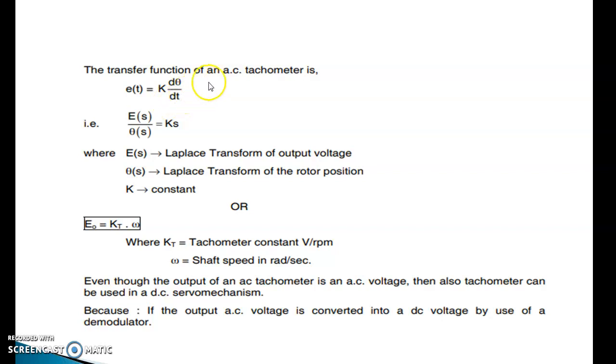The transfer function of an AC tachometer: E of t equals k d theta by dt. That implies Es by theta s equals k times s, where Es equals Laplace transform of rotor voltage, theta s equals Laplace transform of rotor position, k equals constant. Or you can write E zero equals kt times omega, where kt equals tachometer constant in voltage per rpm, and omega equals shaft speed in radians per second.